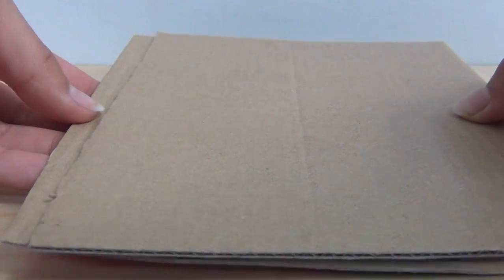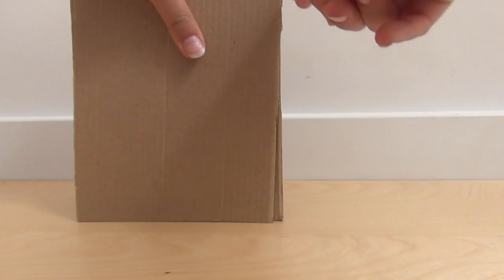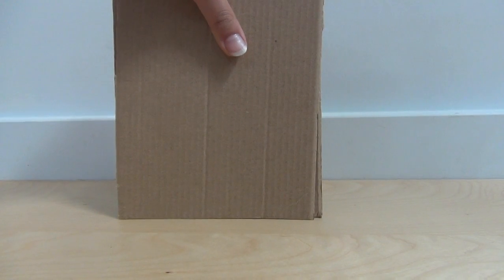First cut out two large, identical pieces of cardboard. Make sure your cardboard is the height of what you want your staircase to be and the width of what you want your staircase to be.